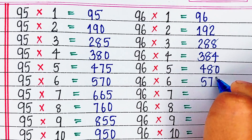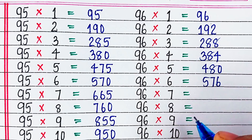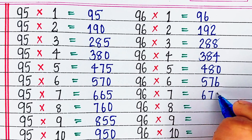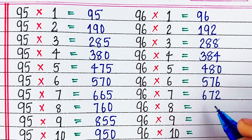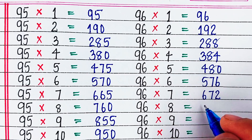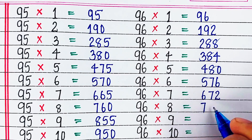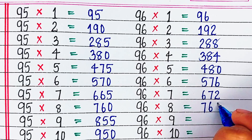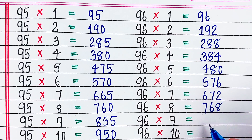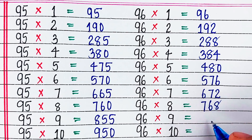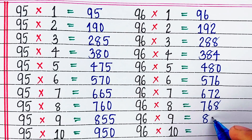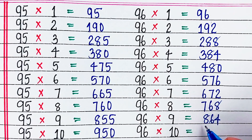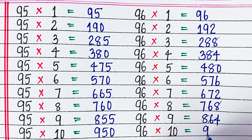96 sixes are 576. 96 sevens are 672. 96 eights are 768. 96 nines are 864. 96 tens are 960.